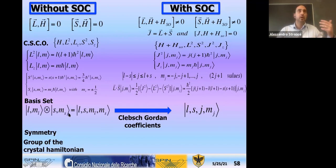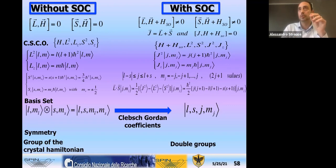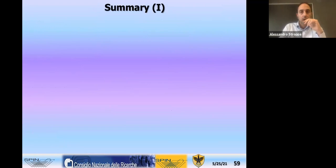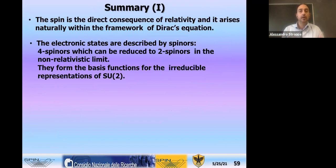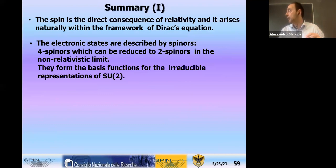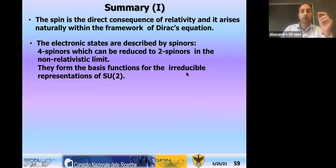In summary: spin is derived from the Dirac equation, which is coherent with the relativity principle. From a four-component formalism, with some approximation we arrive at a two-spinor formalism. These are spinors and not vectors because they have well-defined transformation rules under Lorentz transformations, connected to the irreducible representations of the group SU(2) — the special unitary 2×2 group.